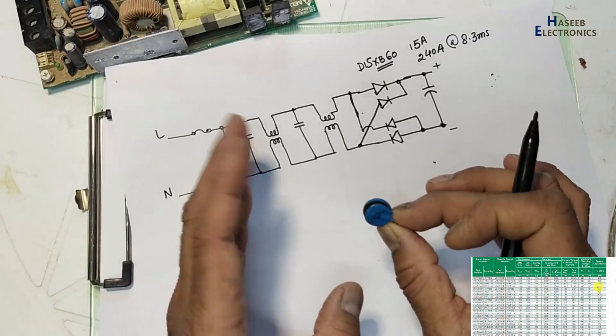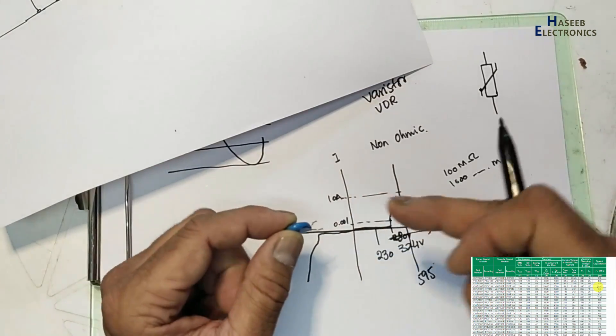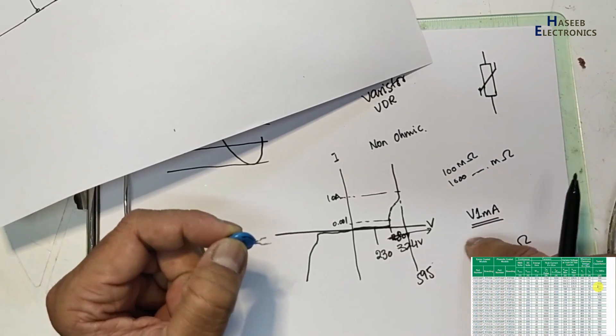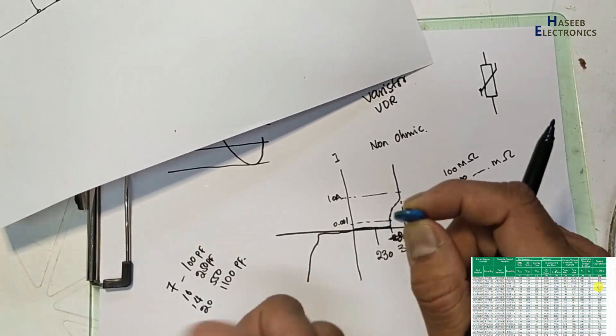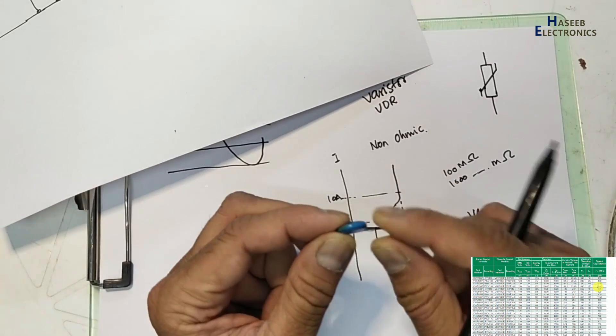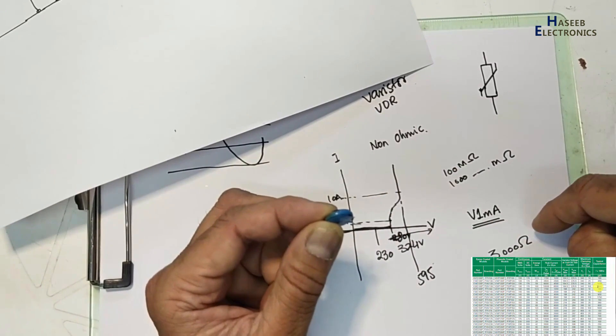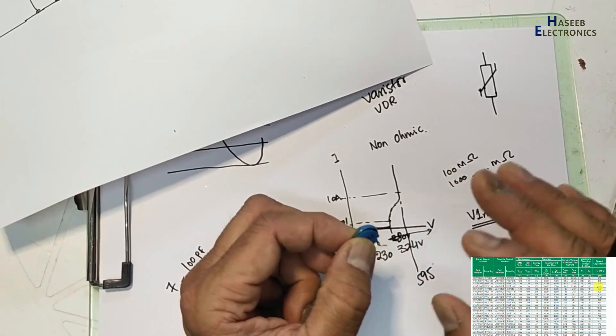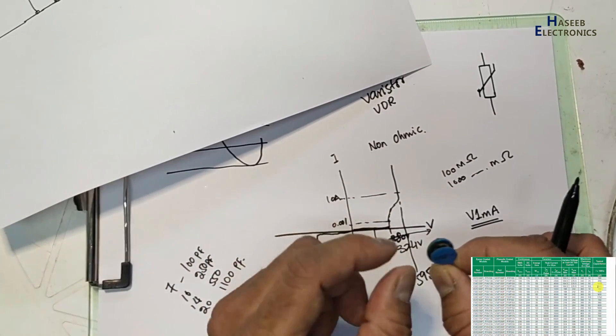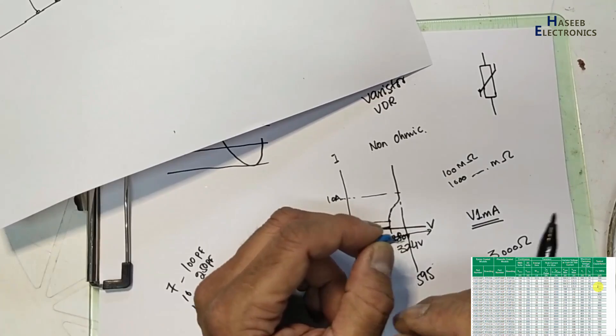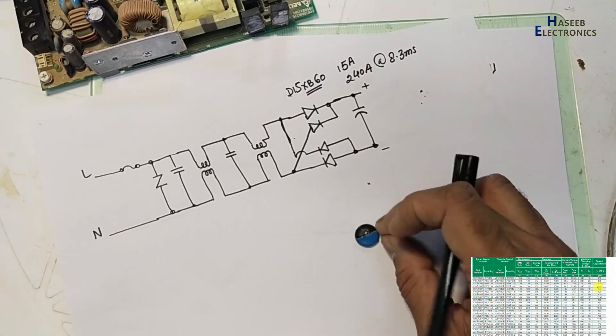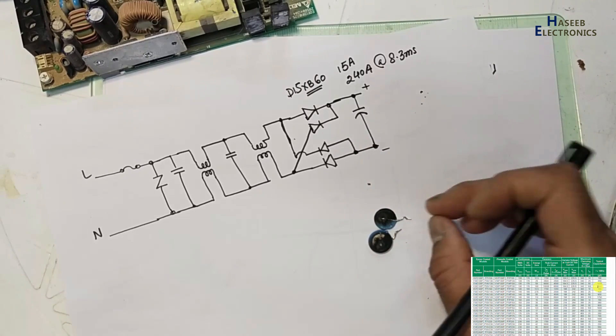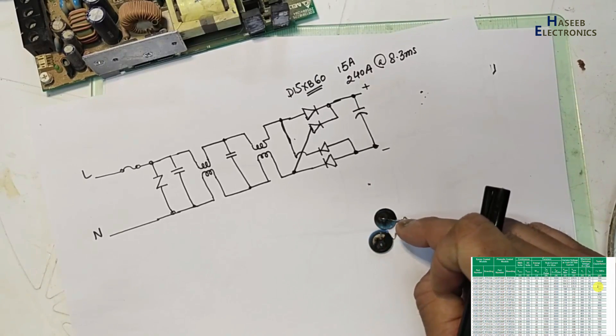When it jumps to nominal voltage range, that is V1 milliampere, at that time its capacitance will decrease because at that time it will work in resistive mode, it will work in conduction mode. And when it works in clamping mode, at that time it will handle as a short circuit.